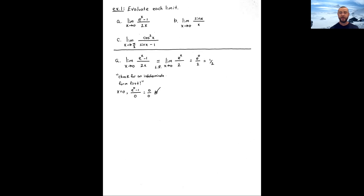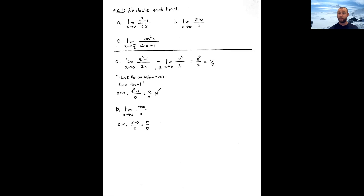Let's go through part (b): the limit as x approaches 0 of sin(x)/x, which we may have encountered earlier in the course. We first check for an indeterminate form. The denominator clearly gives 0. For the numerator, recall from the unit circle that sin(0) = 0 — it's the y-coordinate at angle 0. So we do get the indeterminate form 0/0, meaning we can apply L'Hôpital's Rule.